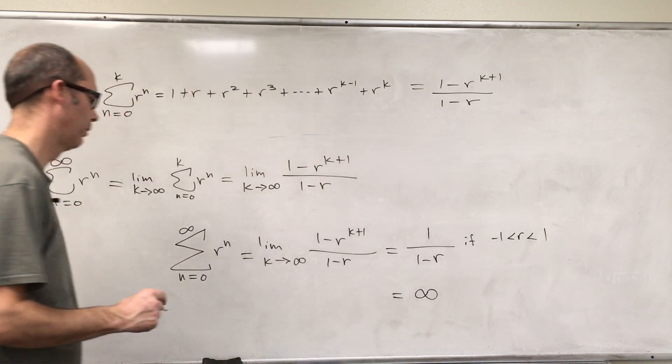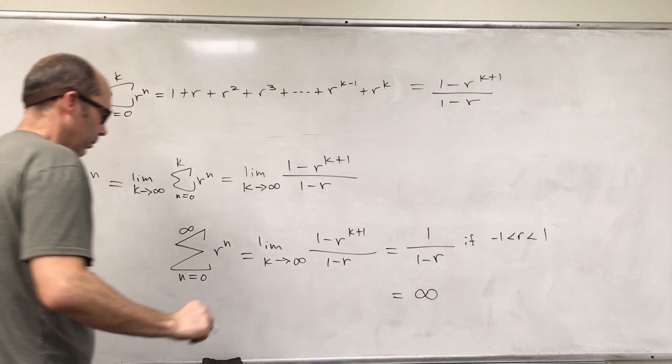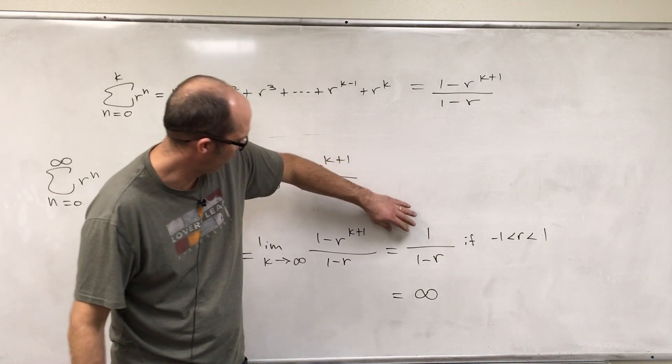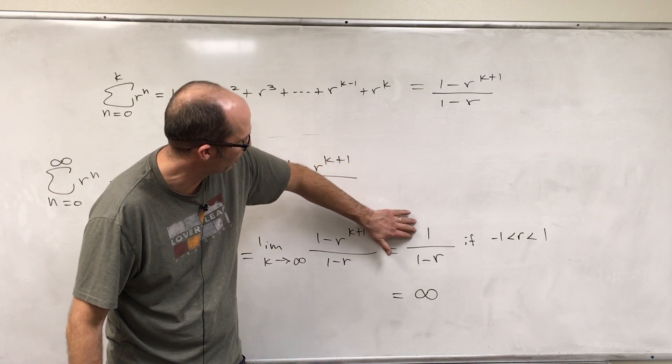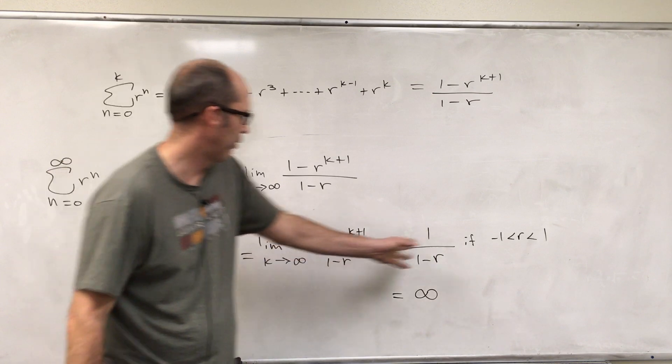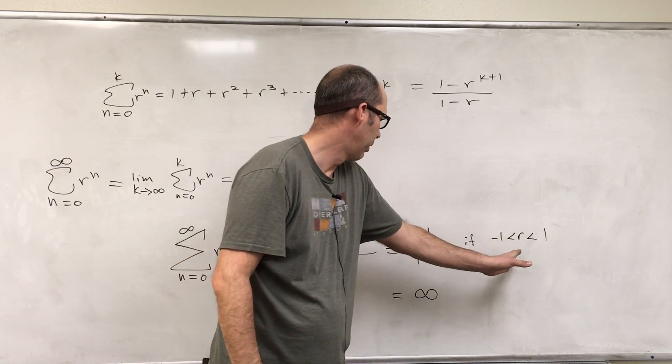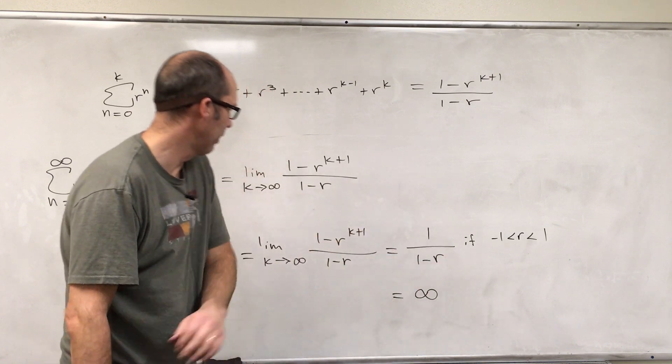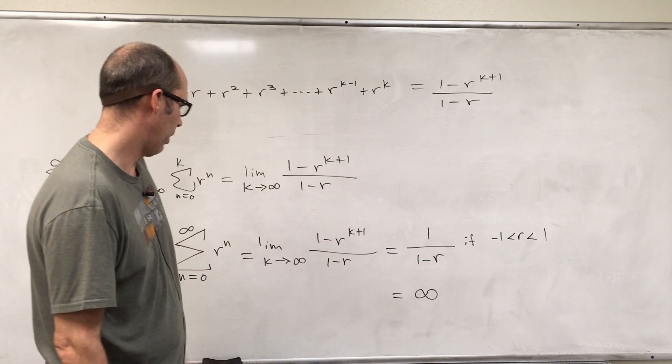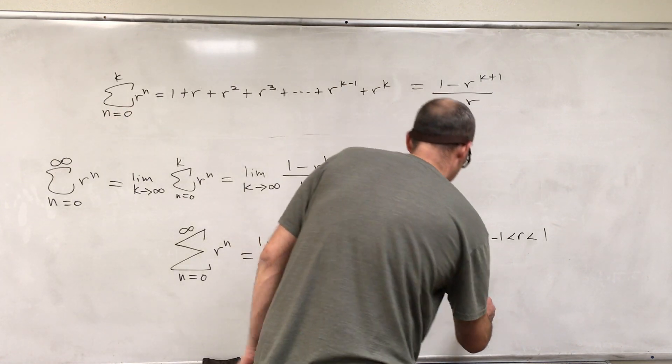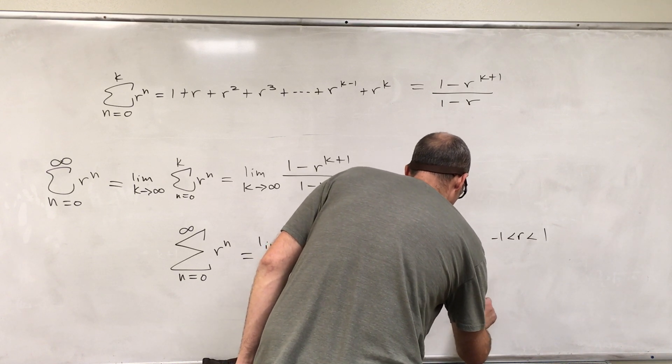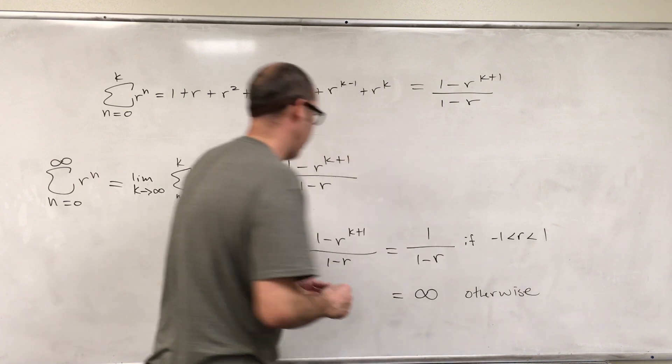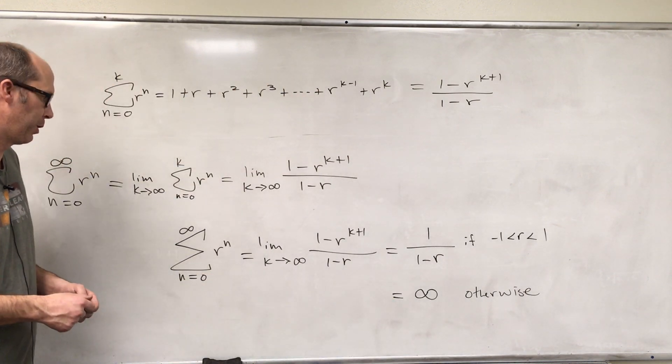So it converges to that number, and it diverges otherwise. So if R is between negative 1 and 1, it converges, and it diverges otherwise. Alright, so that's the formula for a geometric series.